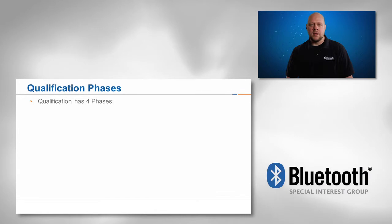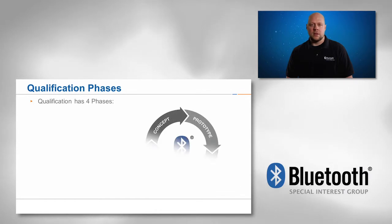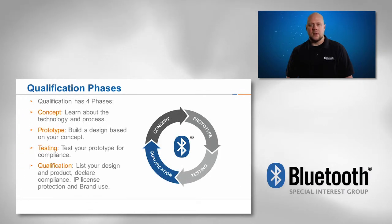Qualification is the SIG's term used for certifying Bluetooth designs. There are four main phases a member goes through while developing a new Bluetooth design. These phases are concept, prototype, testing, and qualification.